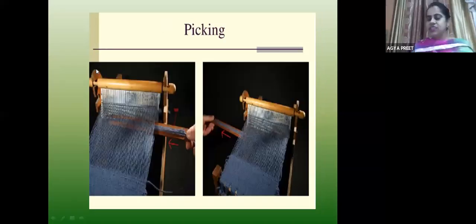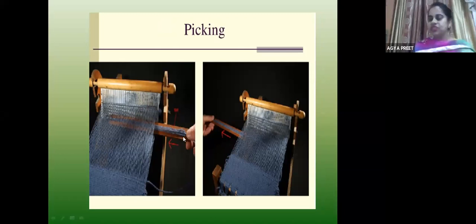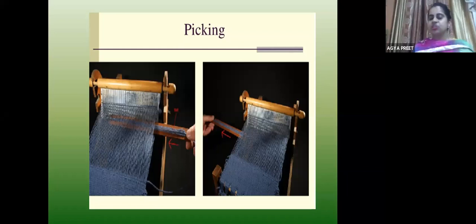Next is picking. You have separated the warp, but now you have to insert the weft — everybody knows weaving is the interlacement of warp and weft. Weft is inserted with the weft insertion device. It can be your shuttle. For shuttle looms and shuttleless looms, there are different types: projectile, rapier, air jet, water jet. The process of insertion of weft through the shed is called picking.